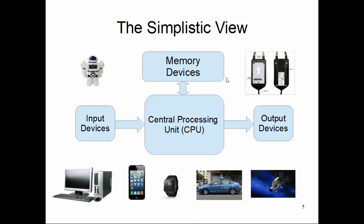If you look at all these different forms of computing machines — like iRobot, smartphone, or Google car — all of them share a very simplistic generic concept. All of them have a central processing unit, which is the main part crunching the information. They are also attached with input devices through which they receive information. For example, a desktop gets input from a keyboard and mouse, whereas a Google car gets input from its various sensors.